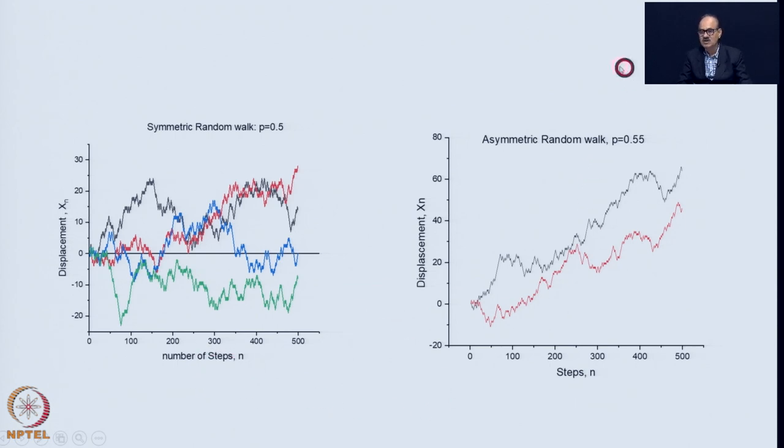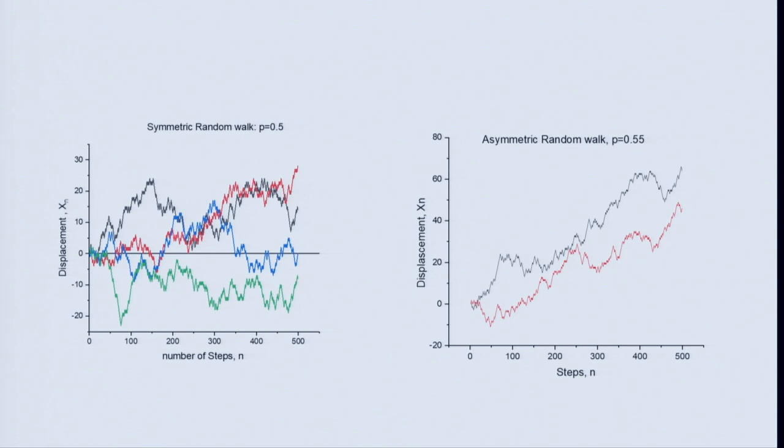Same thing you can execute for asymmetric random walk. Instead of 0.5 we took p equal to 0.55 here and we can already see a tendency to move only in positive direction because it was a forward walk. Sufficiently large number of steps almost direct the motion along the direction. That is why we called p minus q over 2 as virtually equivalent to a forward velocity or a forward drift.